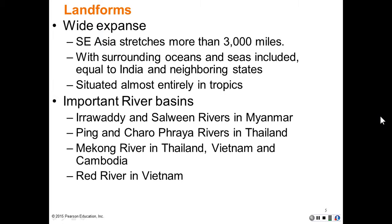Southeast Asia stretches more than 3,000 miles with surrounding oceans and seas included, and is equal in area to India and its neighboring states. It is situated almost entirely in the tropics. It has important river basins, including the Irrawaddy and Salween rivers in Myanmar, the Ping and Chao Phraya rivers in Thailand, the Mekong River in Thailand, Vietnam, and Cambodia, and the Red River in North Vietnam.